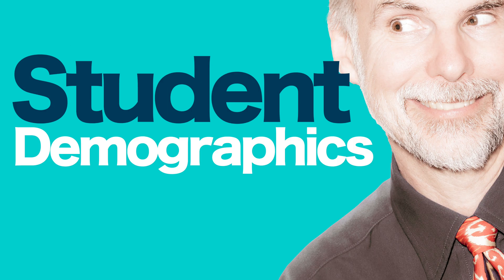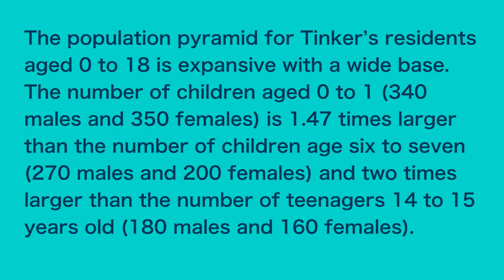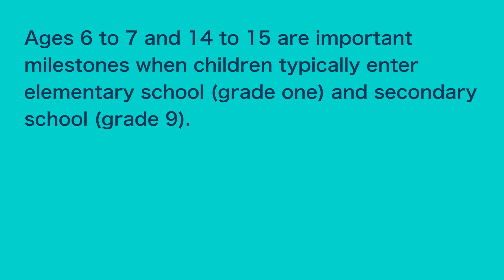Next comes the description of Tinker's student demographics. The population pyramid of Tinker residents age 0 to 18 is expansive with a wide base. The number of children age 0 to 1, which is 340 males and 350 females, is 1.47 times larger than the number of children age 6 to 7, which is 270 males and 200 females, and two times larger than the number of teenagers 14 to 15 years old, which is 180 males and 160 females. Ages 6 to 7 and 14 to 15 are important milestones when children typically enter elementary school grade 1 and secondary school grade 9.